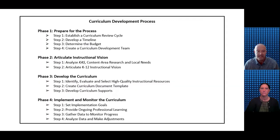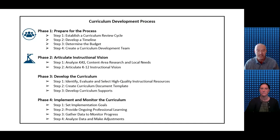There are four phases to the CDP, meant to be completed in order so the learning and work from one phase can fully inform the next. Phase one is about preparing for the process, thinking about the budget, timeline, and other logistics. In phase two, the curriculum team engages in analysis of the standards and current research on teaching and learning in the specific content area, matching that to an inventory of local needs. As a result, the team works to articulate their instructional vision of what they want the student experience to be in the content area across all classrooms in the school or district.